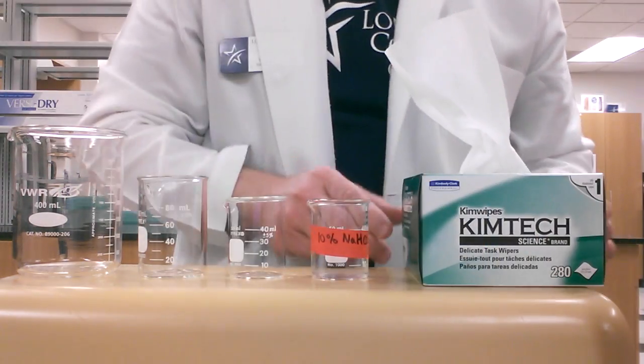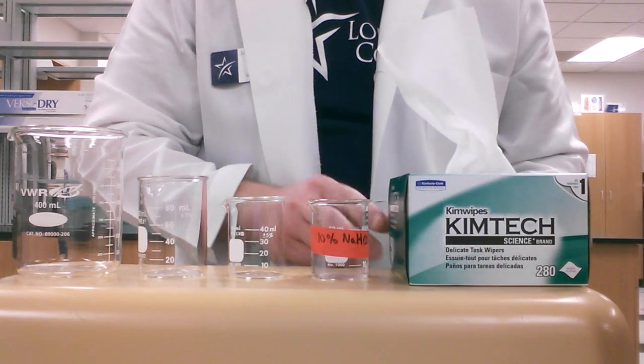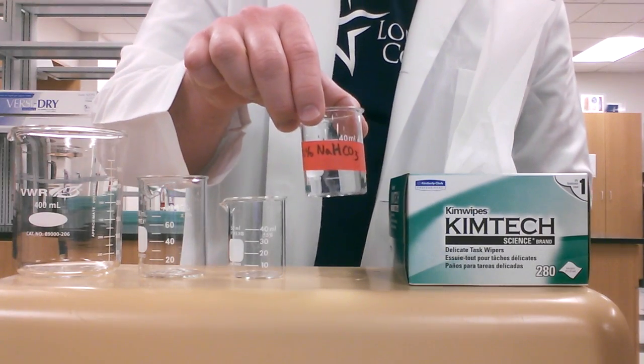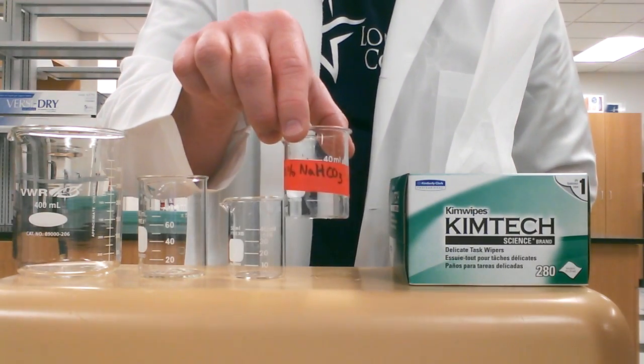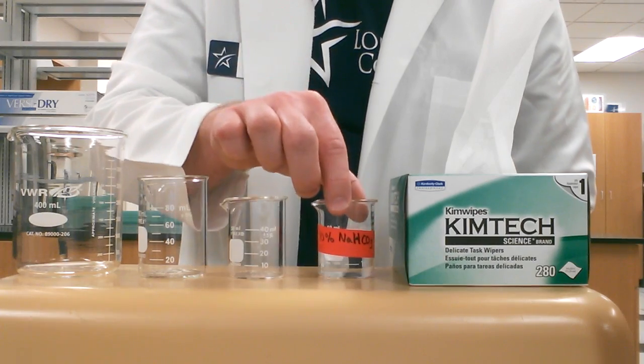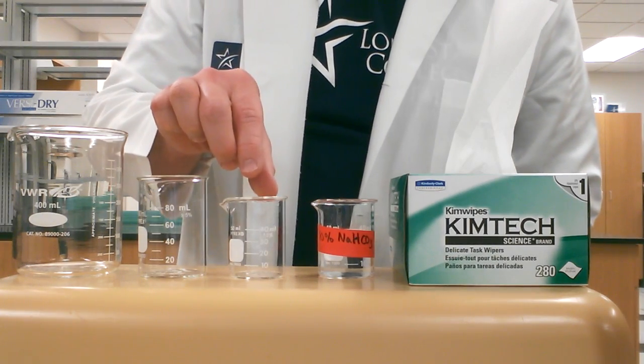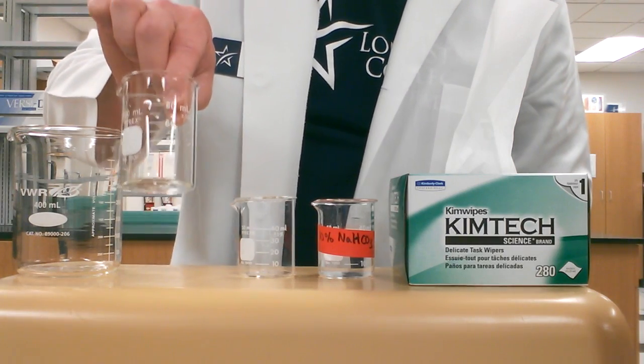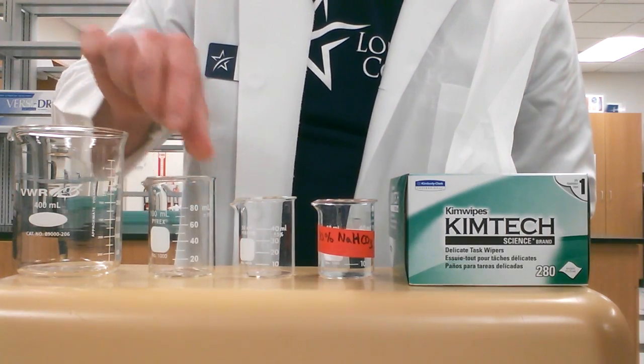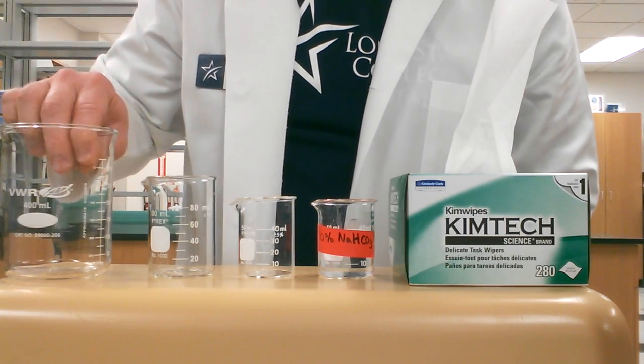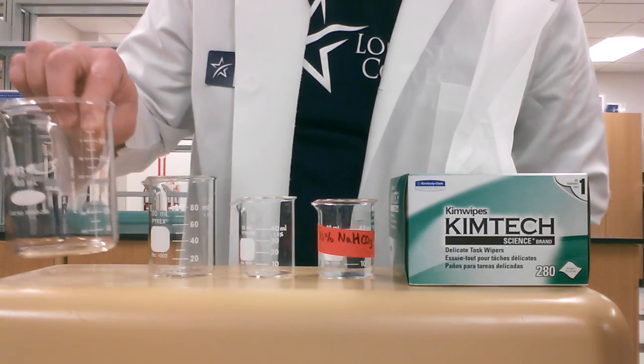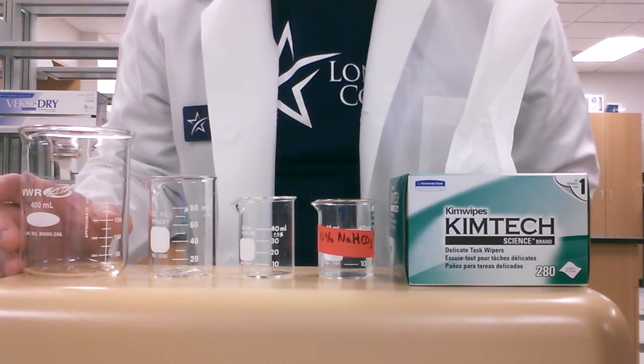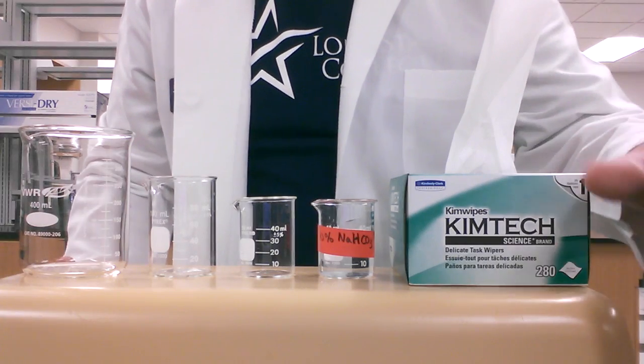The first thing you're going to need is some chem wipes, the solution that you're going to measure. In my case, I have a 10% sodium bicarbonate solution. Then you can use either a small 50 ml beaker or a 100 ml beaker. I also have a larger beaker you don't have to use, but I'm going to use this for a rinsing step because I don't have a sink right here.